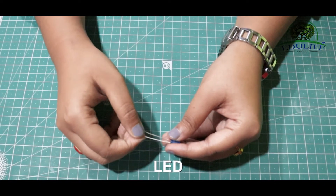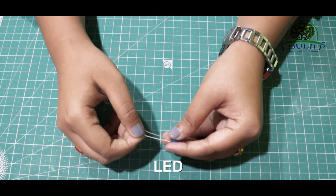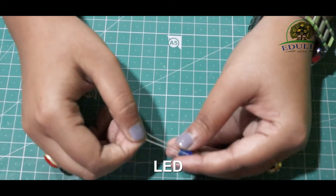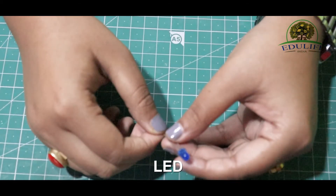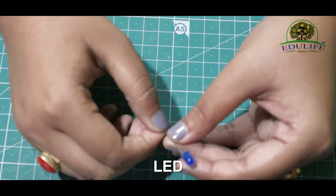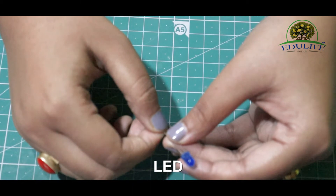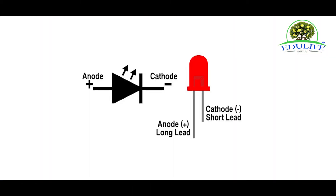LED — LED is a light emitting diode. It is used for indicating light. The longer leg is positive and the shorter leg is negative.